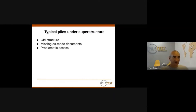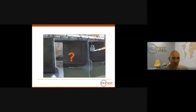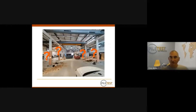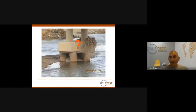The typical scenario for piles under a superstructure is that they are usually old, estimate documents are missing or only partially available, and access is problematic. For example, with a bridge we can't see the top of the piles and have no idea how long they are — we may want to expand the bridge or plan maintenance with no information. Similarly, a building may need expansion but pile records are lost.